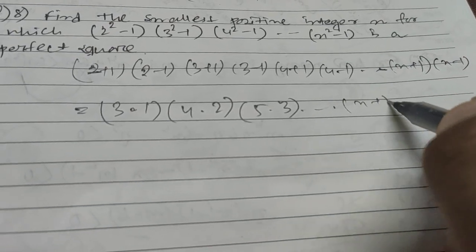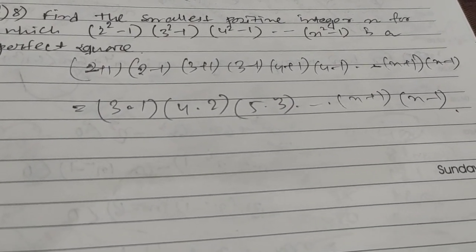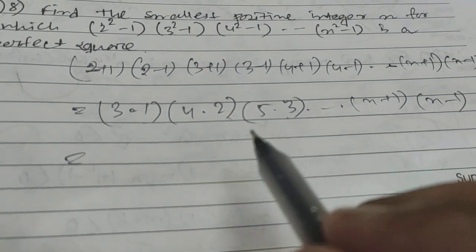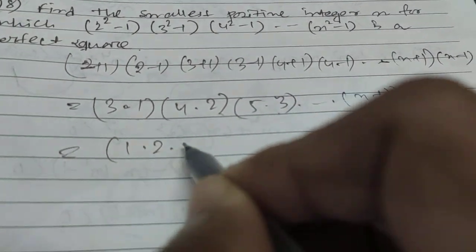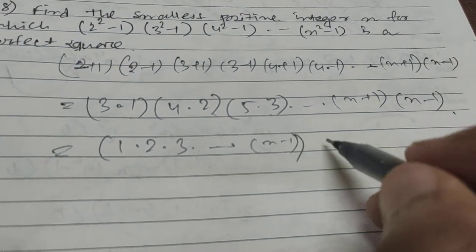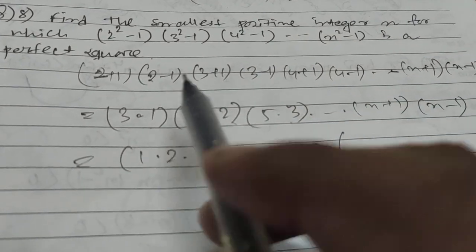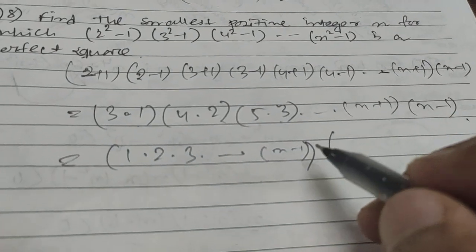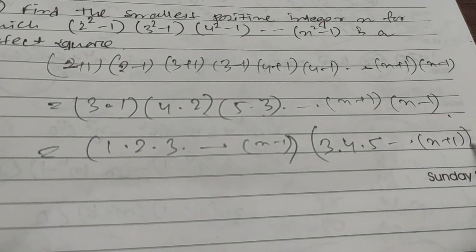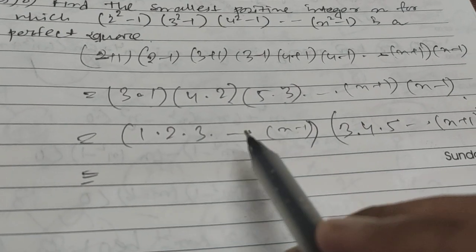Now take one group of terms: 1×2×3×...×(n-1), and the other group: 3×4×5×...×(n+1).